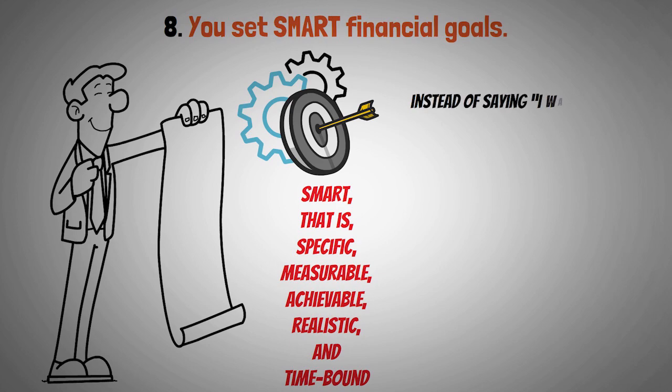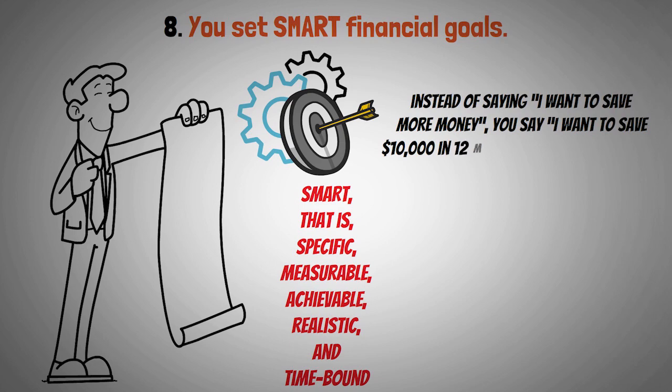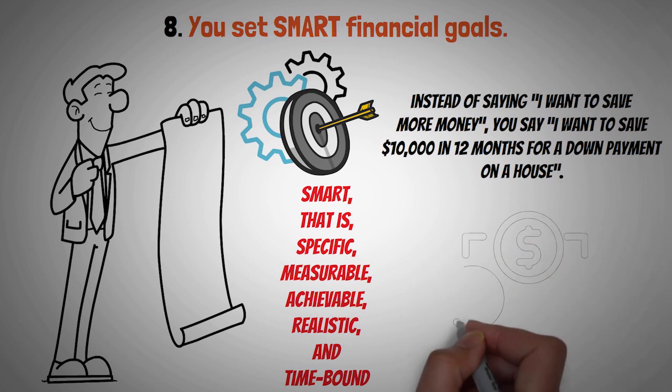For example, instead of saying, 'I want to save more money,' you say, 'I want to save $10,000 in 12 months for a down payment on a house.' You also track your progress and adjust your goals as needed. You don't just hope for the best, you work for it.